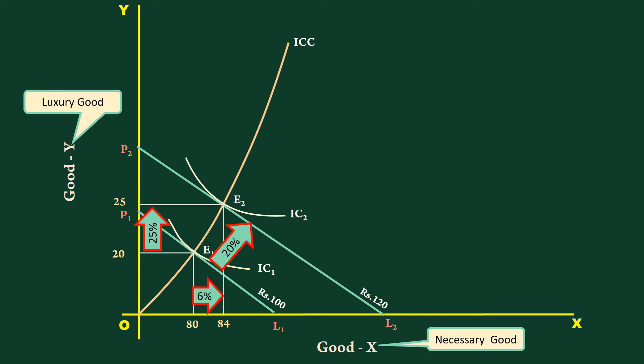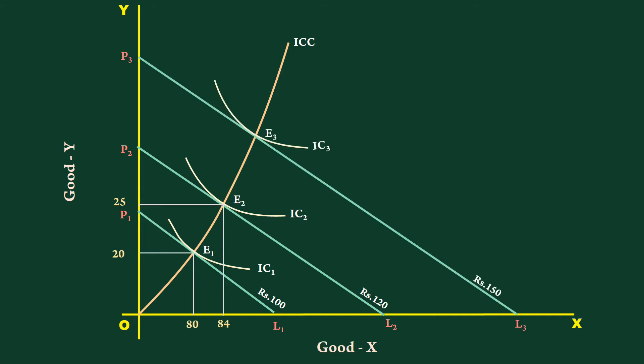Similarly, when the income increases from 120 rupees to 150 rupees, the percentage increase in income is 25 percent.